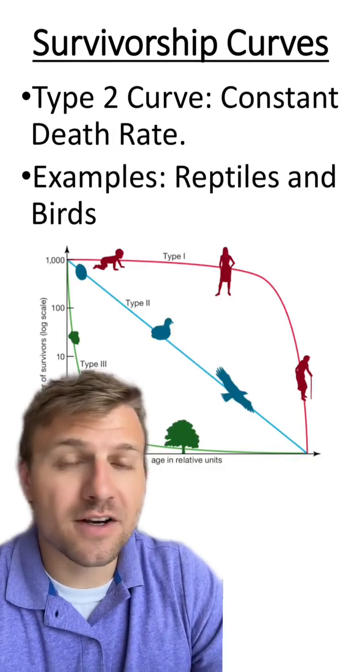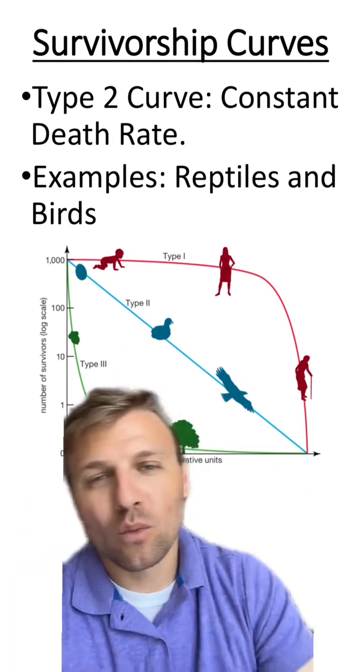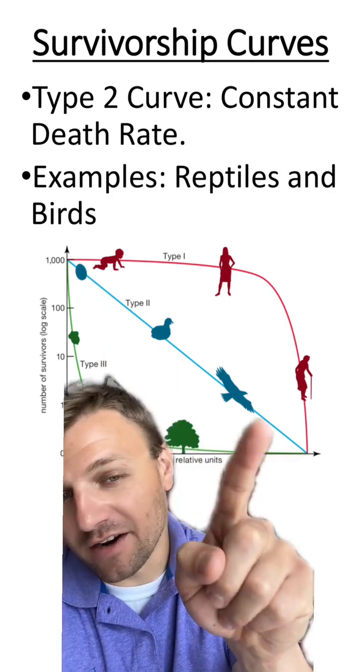In a type 2 curve, there is a constant death rate. Examples for type 2 curves are like reptiles and birds, where over time, the death rate will remain constant until the very end.